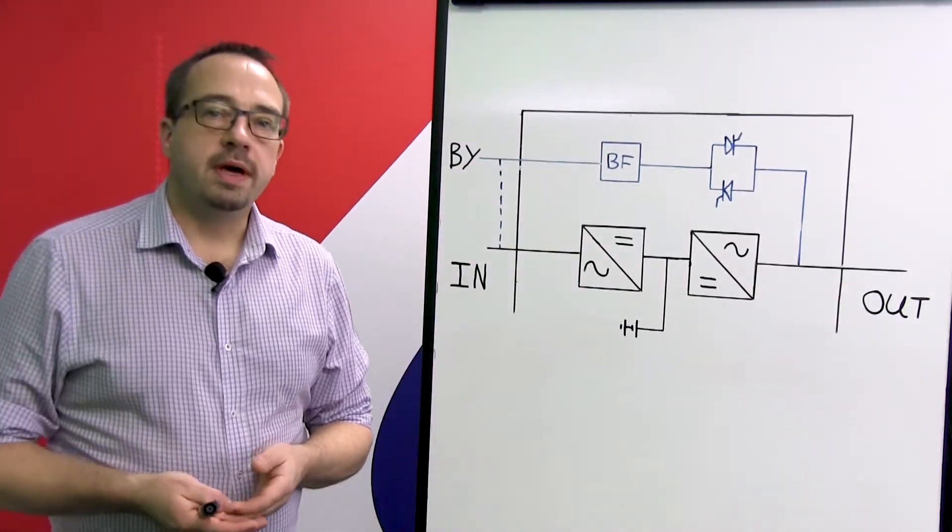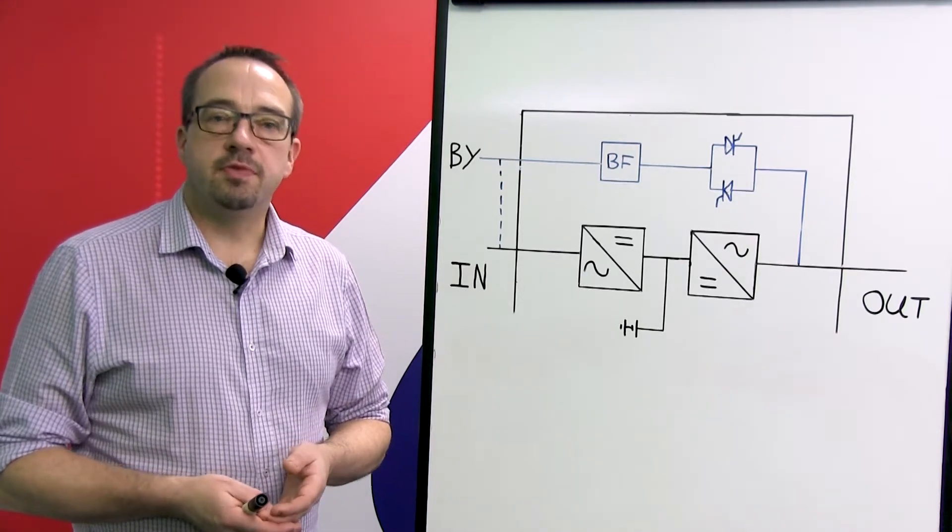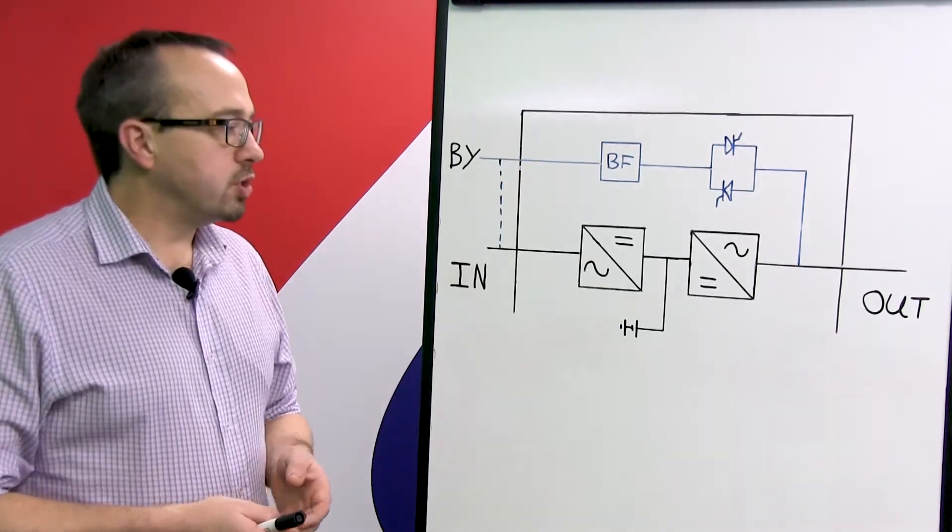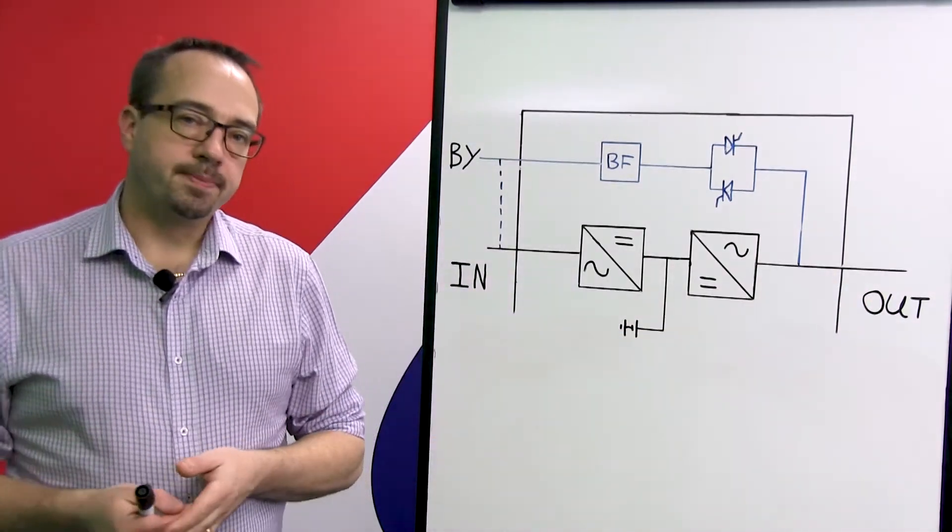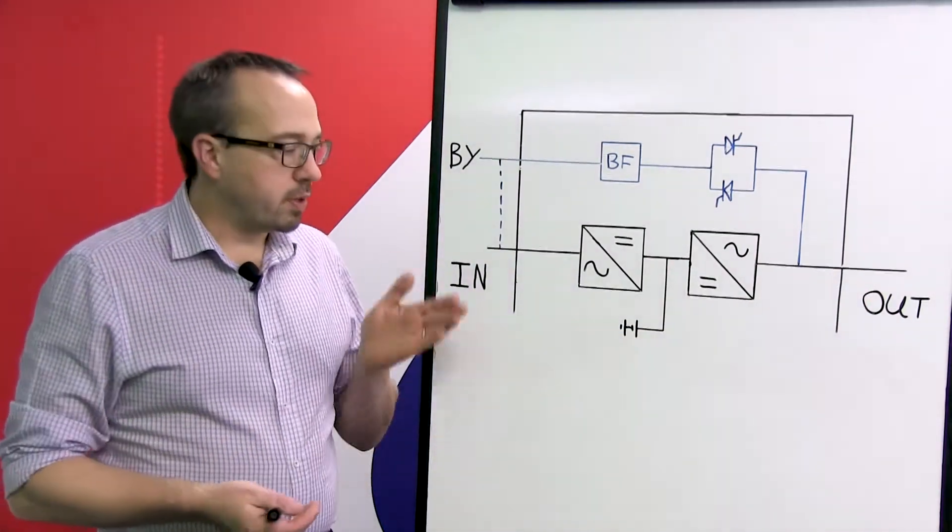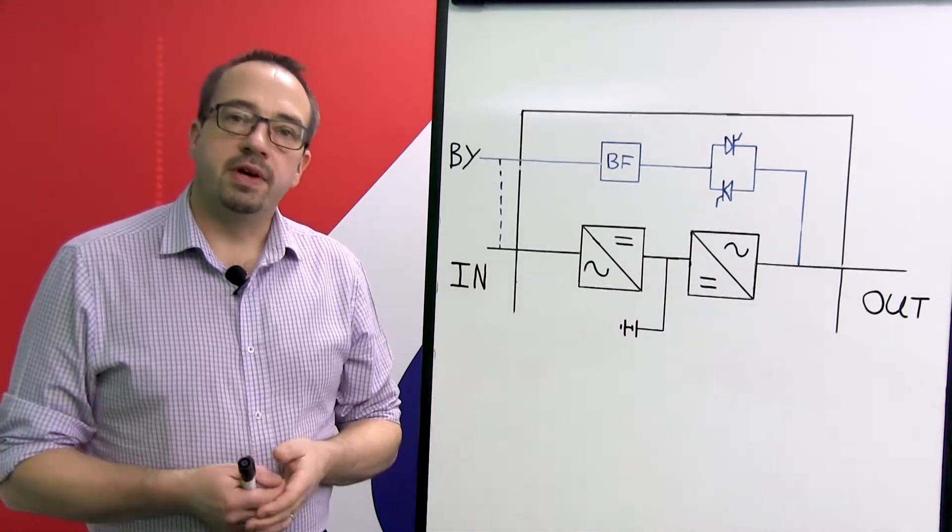Now the primary purpose of a UPS is to ensure that should the incoming main supply to the UPS system fail, then the UPS will ensure that the supply to the critical load remains present all the time. This is referred to as no break because when the main supply fails, the output to the critical load remains completely unaffected.